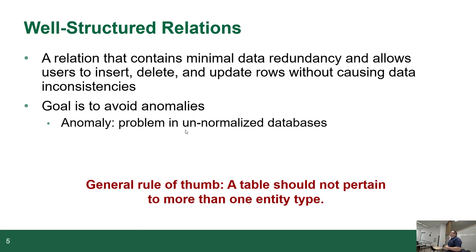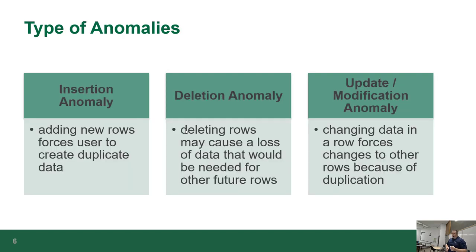An anomaly is a problem that exists in a database that hasn't been normalized yet. A really good rule of thumb is that any given table in a database should only ever contain data about one thing — a table should only pertain to one entity type. We don't want to have a table that has data about a customer, a tax board agent, and an order that was placed all at the same time. That makes no sense and it's too hard to manage. So there are three kinds of anomalies. An insertion anomaly happens when you add a new row to a table and you end up having to create duplicated data.